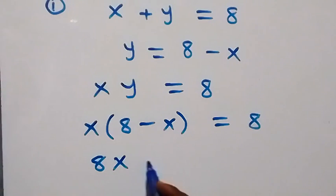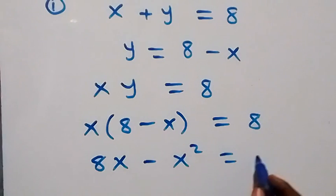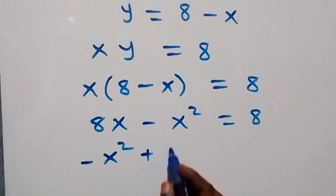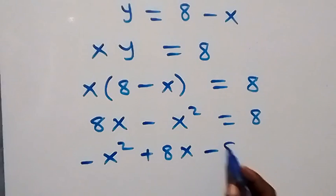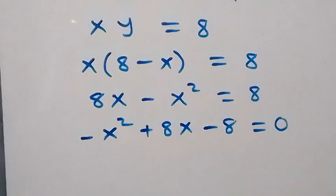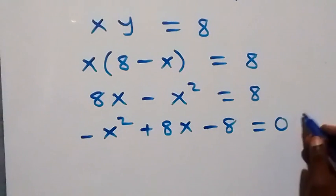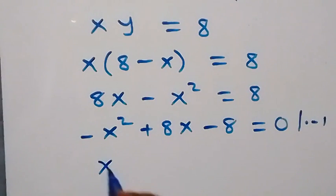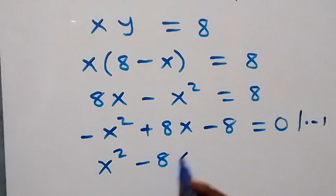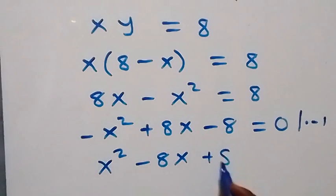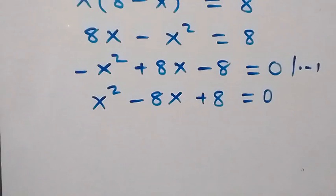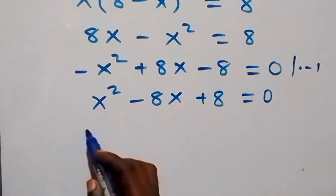Expanding the brackets gives us 8x minus x squared equals 8. When we rearrange, this becomes minus x squared plus 8x minus 8 equals zero. Multiplying through by minus one to clear the negative, we get x squared minus 8x plus 8 equals zero.